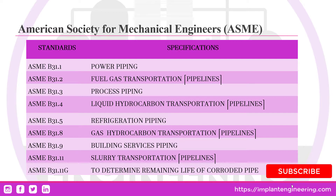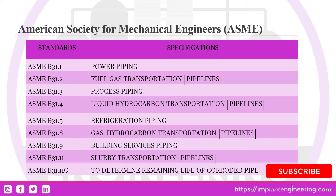ASME B31.3 is used for designing in process industries such as refineries, pharmaceutical companies and chemical industries.